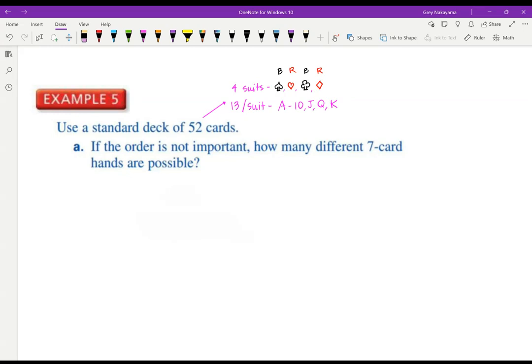If the order is not important, how many different seven card hands are possible? Order doesn't matter means it's C combination. I have 52 cards and I want seven of them. So it's 52 choose 7, which is a really large number. 133,784,560. And that is all you have for fundamental counting principle, permutations and combinations.